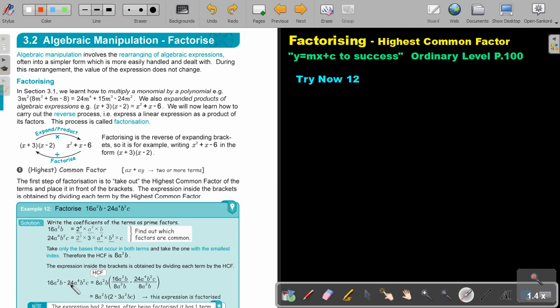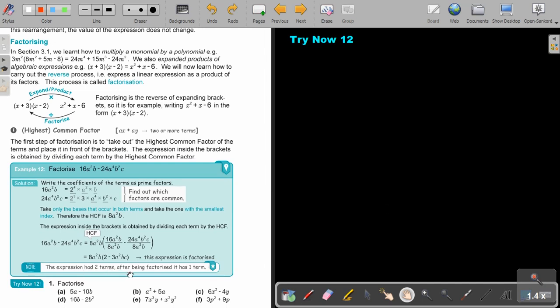And now, this is my highest common factor. And now, to get the answers inside the bracket, I'm going to take this, divide by the highest common factor. This, divide by the highest common factor. And then, I will just simplify this division and this will be my answer. The expression had 2 terms after being factored as 1. And I can test it by multiplying and see if I get this again. So, you can stop the video and you can do number 1A as well as number C as well as number E.